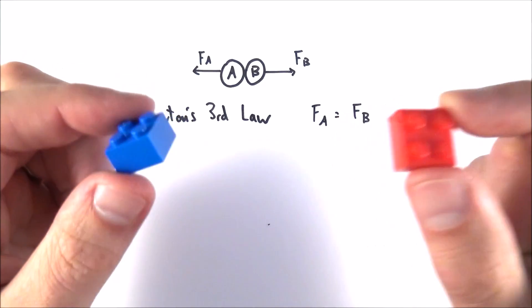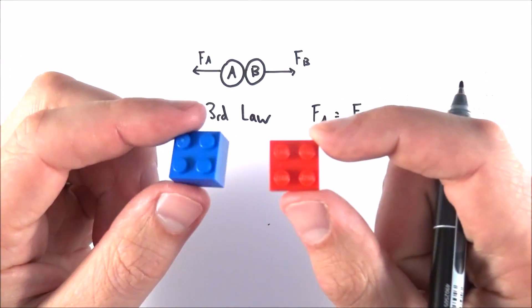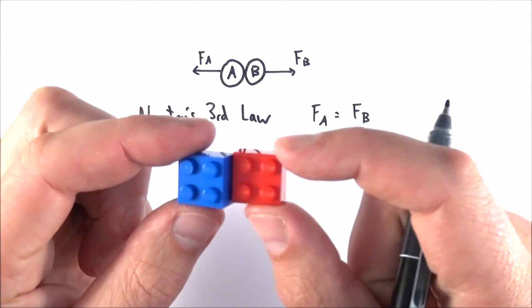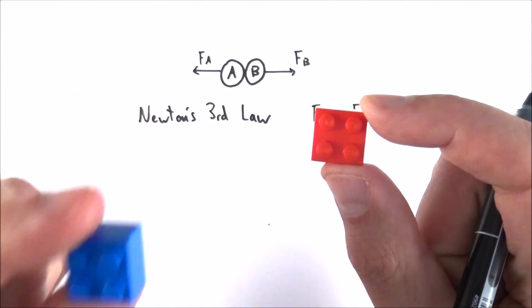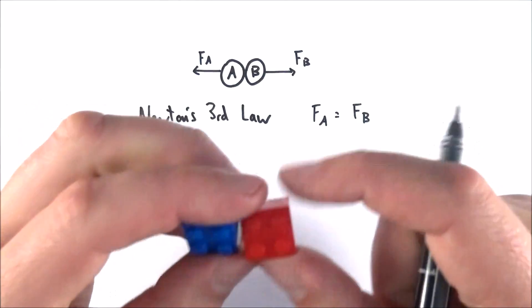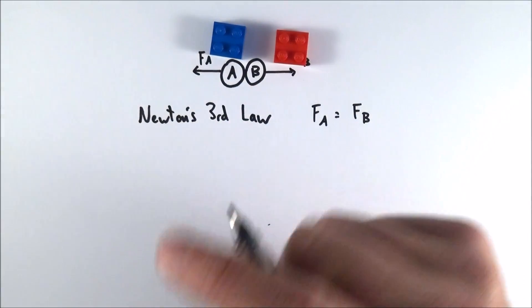Another thing is that this force is going to act for a certain amount of time. It's kind of obvious, but the time that the blue one is in contact with the red is the same as the time that the red is in contact with the blue, and therefore the collision time is going to be exactly the same for both of them.